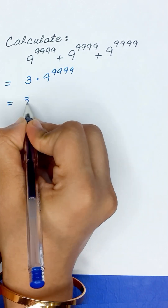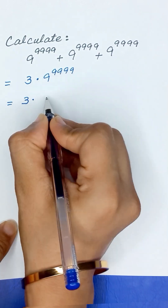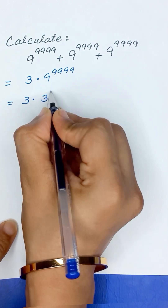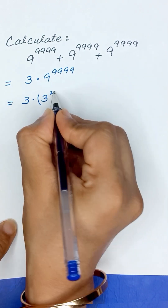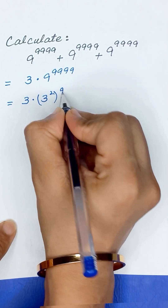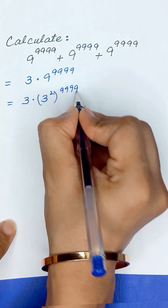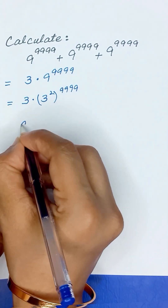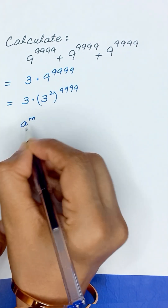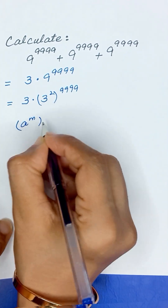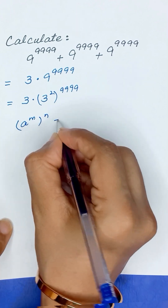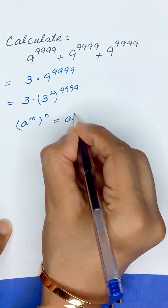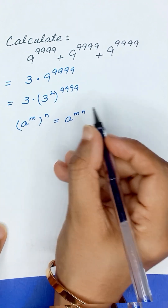This 9 is the same as 3 to the power 2, so we have 3 to the power 2, whole power 9999. As we know, the exponential rule states that a to the power m, whole power n, is equal to a to the power m times n.